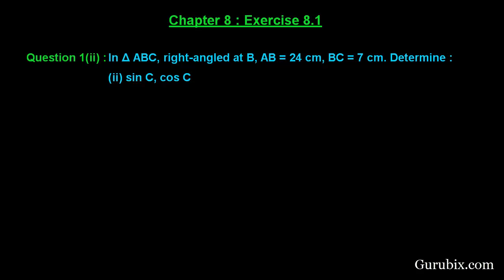Welcome friends, let us solve the second part of question number 1 of exercise 8.1 of chapter 8. The question says in triangle ABC right angle at B, AB is 24 cm, BC is 7 cm. Determine sine C and cos C.